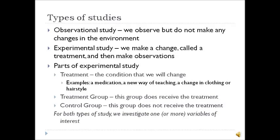The control group is a group that does not receive the treatment. So if we wanted to test if a new medication was effective, we would give that new medication to the treatment group and give a sugar pill or placebo to the control group. For both types of study, we investigate one or more variables of interest — such as income, blood pressure, or how many times a day people eat. These things can change, and we are interested in them, which is why they're called variables of interest.